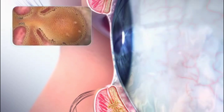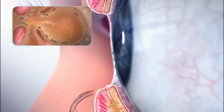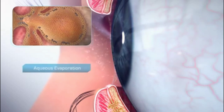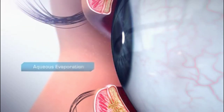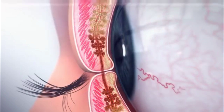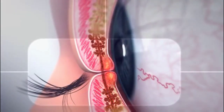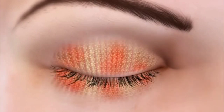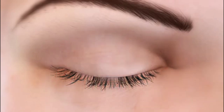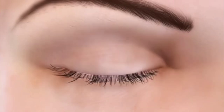When the gland becomes blocked, there is not enough oil to coat the tear film and the aqueous evaporates rapidly. Without adequate lubrication between them, the eyelids and cornea can abrade each other, causing inflammation and cell damage to the lid wiper and cornea. Simply removing meibomian gland blockage isn't enough — the acini may not start producing oil again until the accumulation of dead cells within them are flushed.